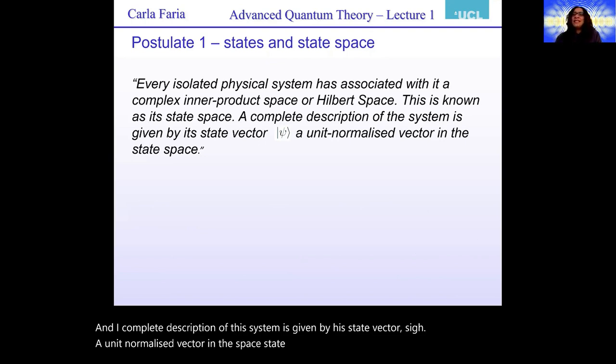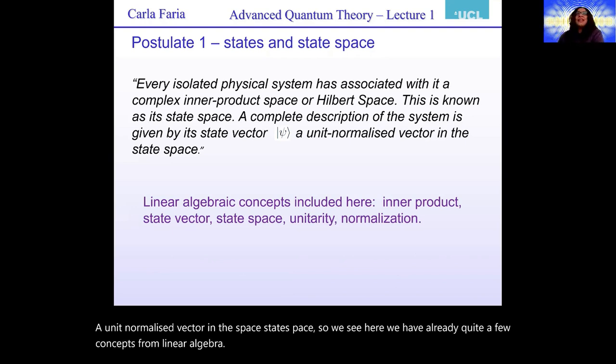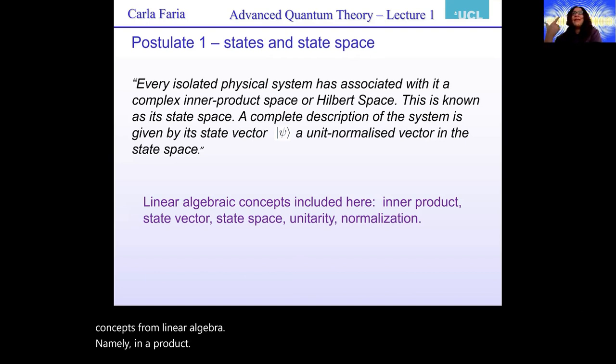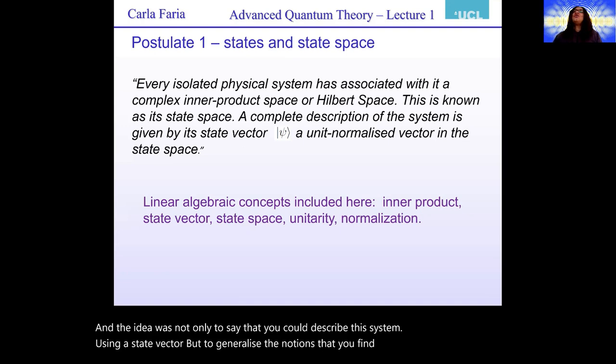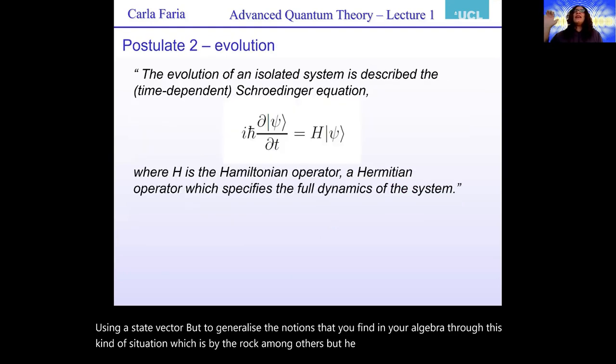So we see here we have already quite a few concepts from linear algebra, namely inner product, state vector, state space, unitarity, and normalization. Just look at this postulate and see how we state it and you're going to see pretty much all of this. And the idea was not only to say that you could describe this system using a state vector, but to generalize the notions that you find in linear algebra to this kind of situation, which is by Dirac, who was absolutely brilliant.